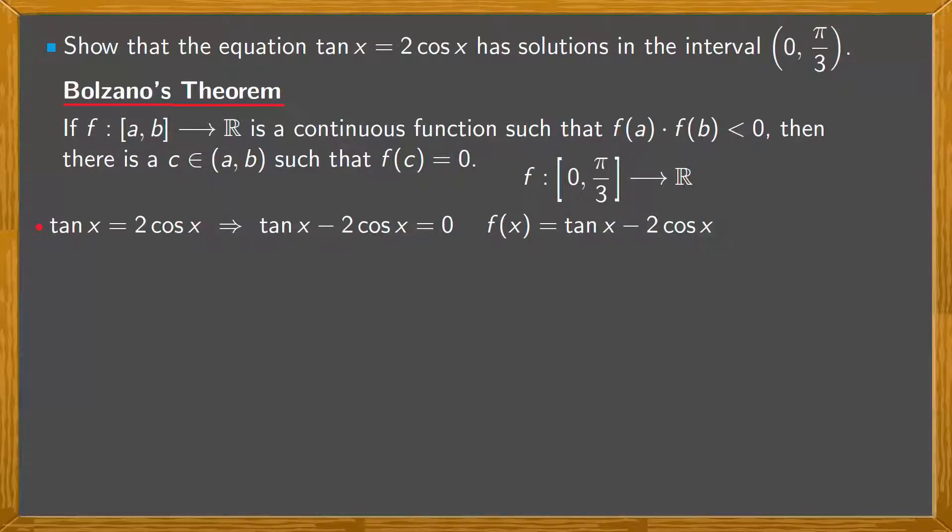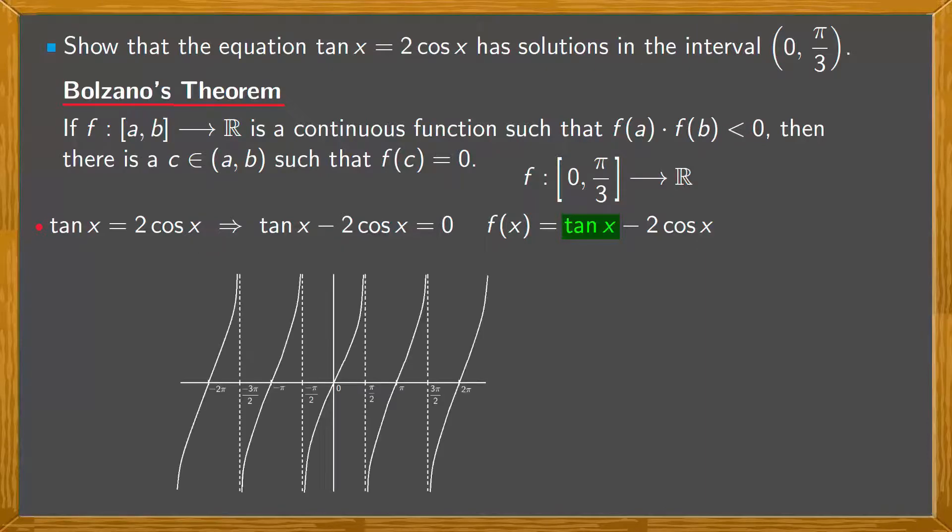Notice that our function is the subtraction of two functions. First, we have tan x. Recall the graphical representation of tangent. Well, π/3 is smaller than π/2. So here we have π/3. And in this part, the graph of the tangent is this. So, tangent is a continuous function in the interval [0, π/3].